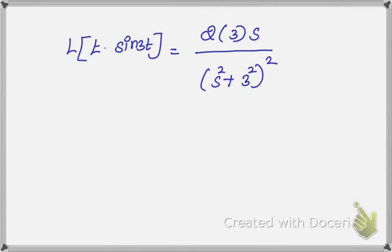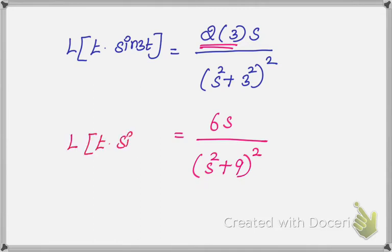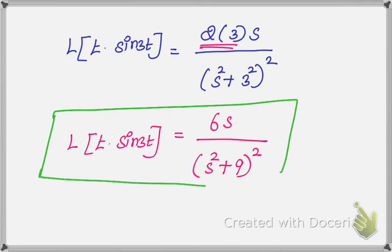Next, multiply all the terms. So 2 times 3 is 6. So 6s over s² plus 3². 3² is what? 9. The whole square. So L{t·sin 3t} equals 6s over (s² + 9)². Just memory the formula, then apply the answer.